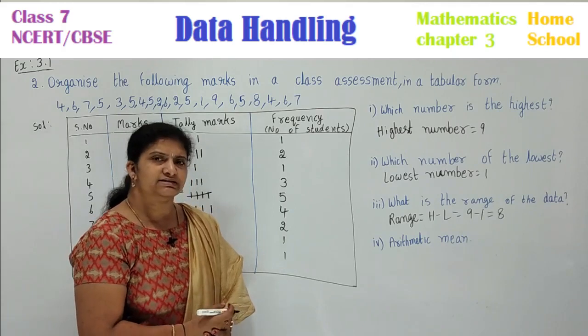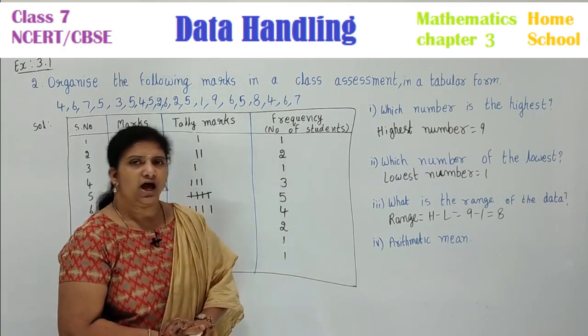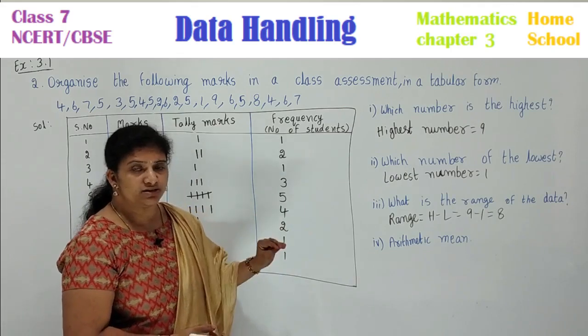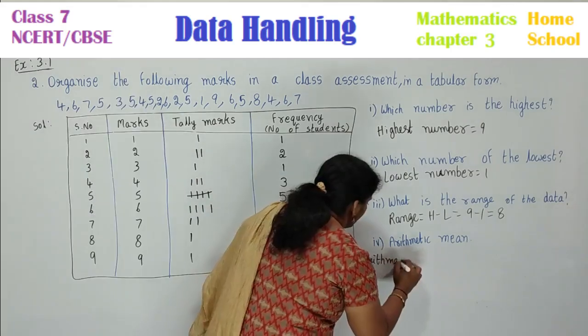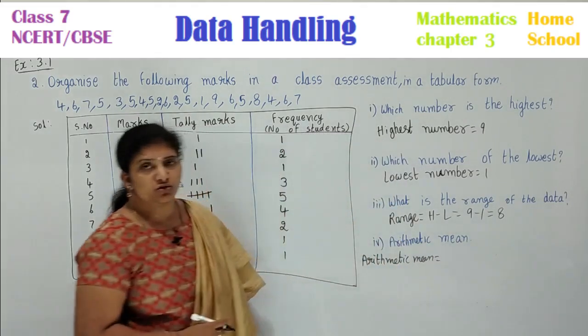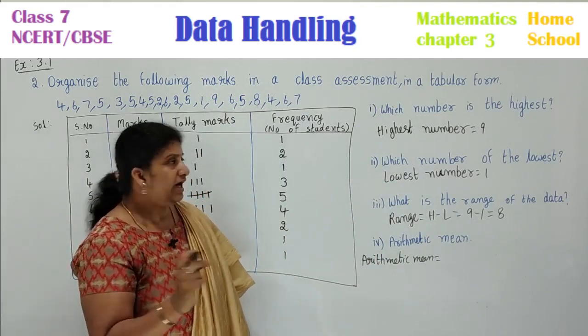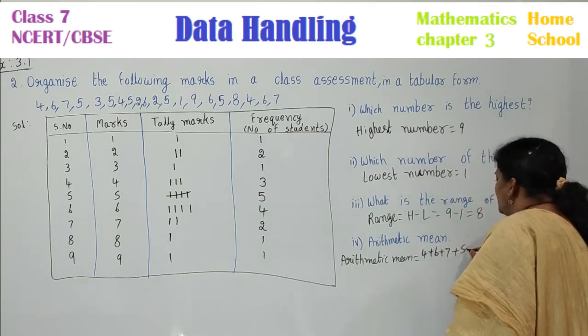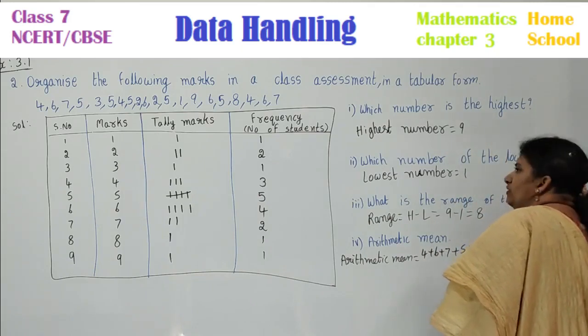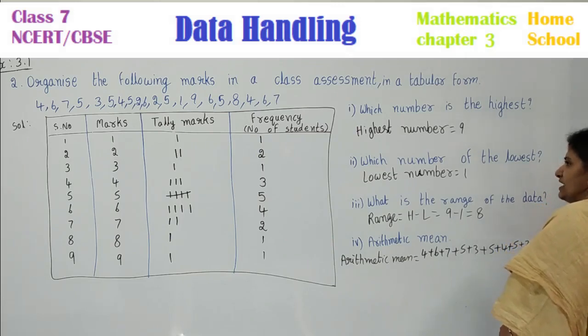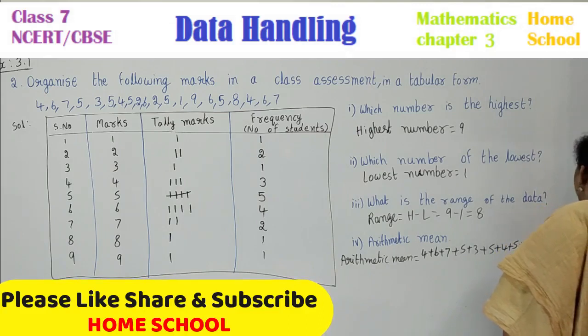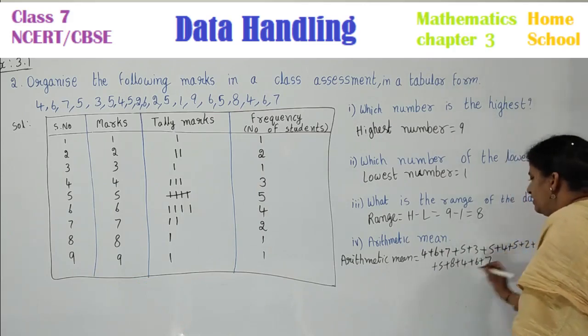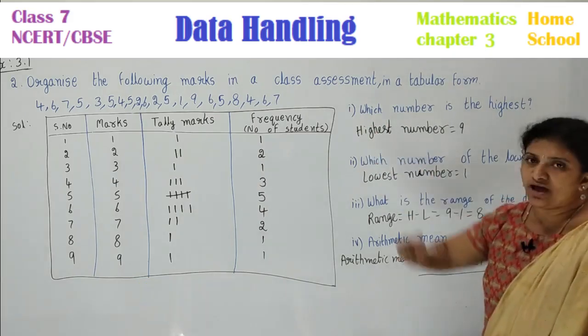Average of these scores. How can you find it children? You need to add all the scores and then divide it by number of scores. That is your average formula. Arithmetic mean is equal to sum of all the scores - add all the scores. What do you have? Start from there: 4 plus 6 plus 7 plus 5 plus 3 plus 5 plus 4 plus 5 plus 2 plus 6 plus 2 plus 5 plus 1 plus 9 plus 6 plus 6 plus 5 plus 8 plus 4 plus 6 plus 7, whole divided by how many scores? 20.